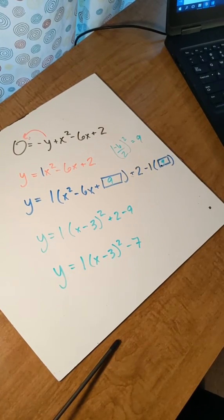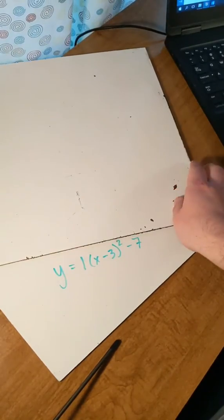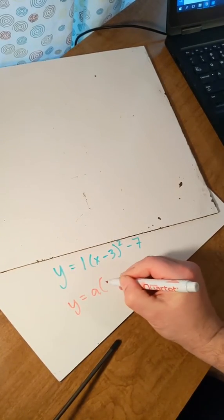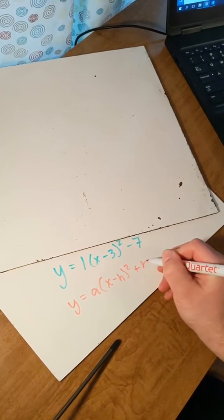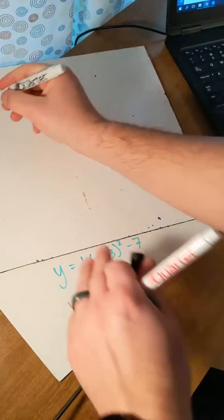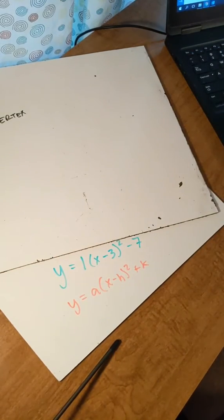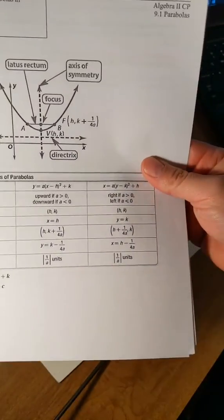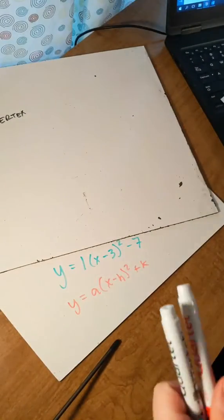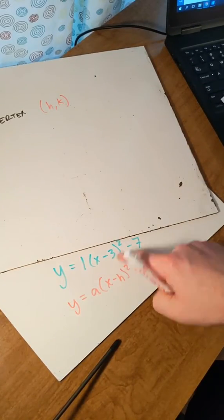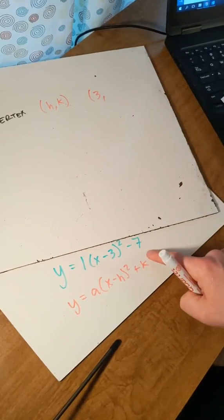The other part — the next question on your Canvas quiz, which is the same question — is to find the important information. We're going to look back at this: y equals a times x minus h squared plus k. All your formulas are on your notes. The vertex for a y equals is at h, k. In this case, h is 3 and k is negative 7.